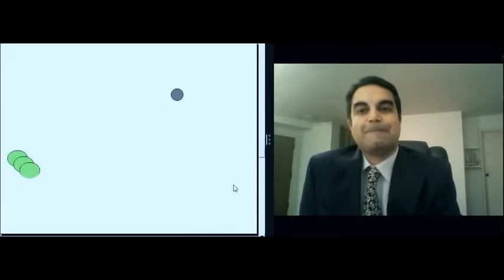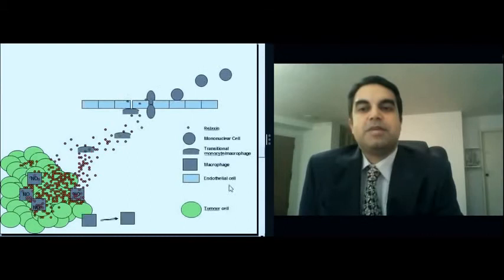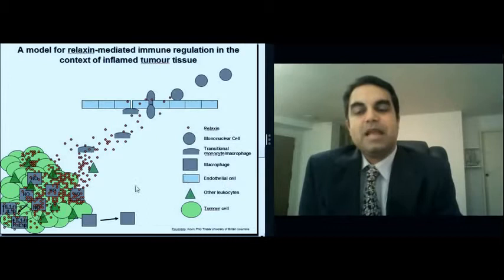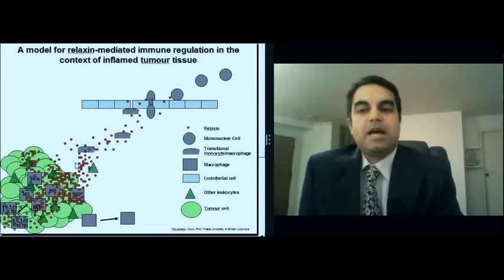So this is an image that was taken from my PhD thesis, where I described the model for relaxin-mediated immune regulation in the context of inflamed tumor tissue. And it's really a counter-current principle, where high levels of a chemokine or cytokine are produced at the tumor site and they produce a gradient that is countered to the pathway of the blood cells.